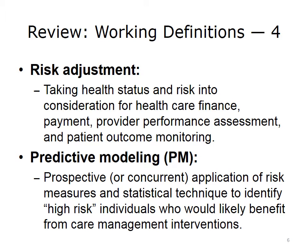In other words, if you're setting a provider capitation rate, the provider would receive a higher budget if their population consists disproportionately of sicker people rather than healthier people. You would also want to take this type of risk into consideration when assessing the efficiency of a certain provider — for example, how many of their patients should receive a certain test, or what is the overall pharmaceutical budget for their patients. If one is looking at the outcome of a provider or a community, one wants to know whether the patients being served started at low risk or high risk. Otherwise, such comparisons across two populations would not be fair.